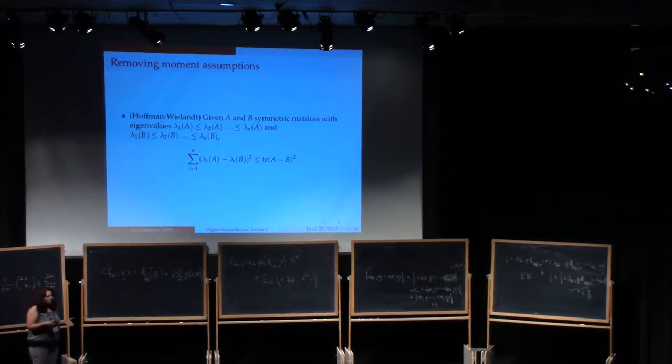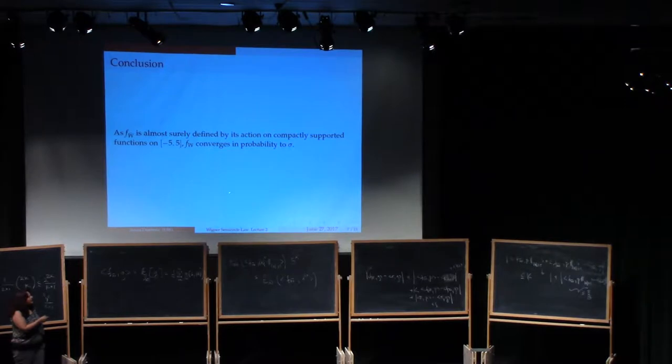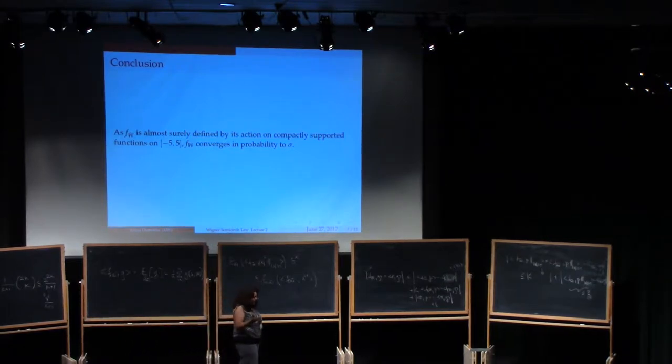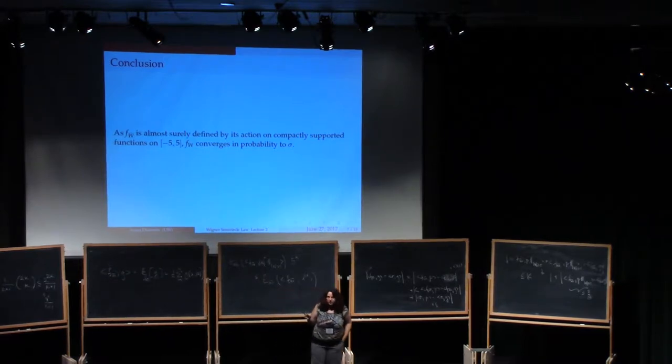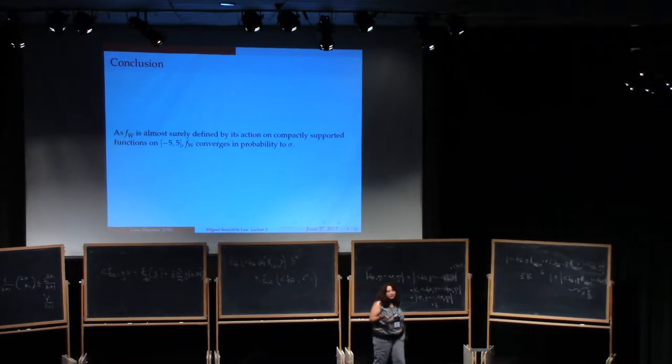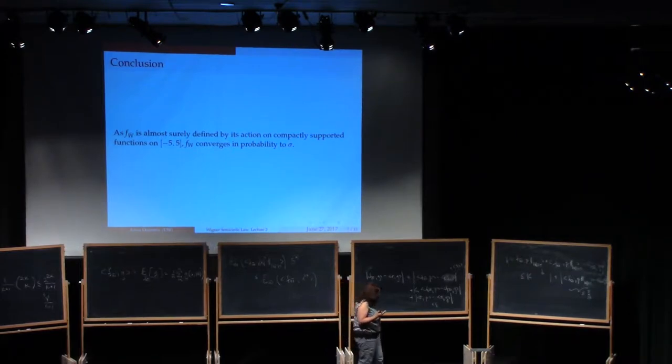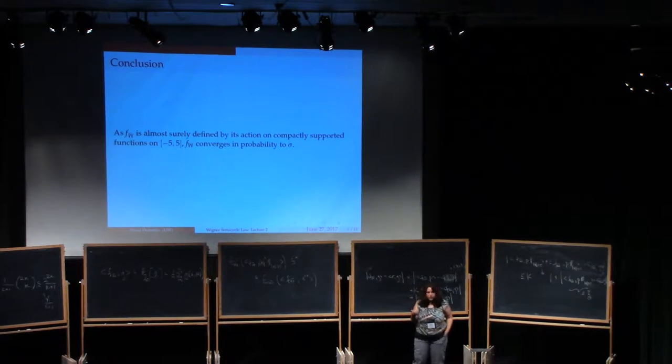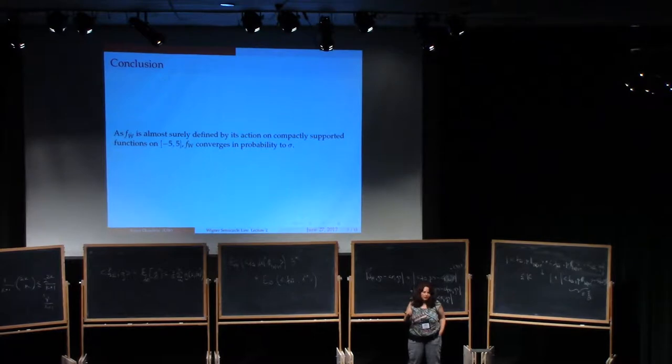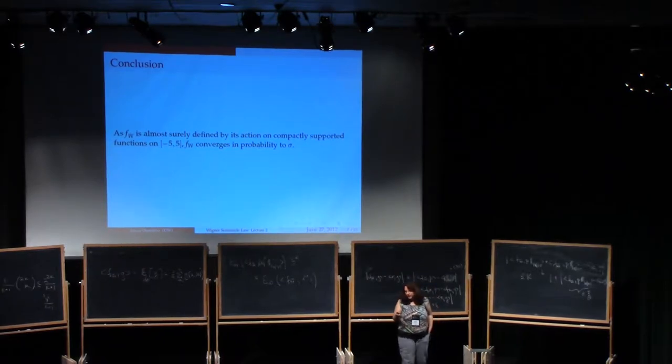But mind you, let me stay here for another second. We only showed this by doing path counting and a bunch of other stuff, and for that you have to assume the existence of moments of every kind. So all the moments are bounded. However, in practice, that's not the requirement for the ESD to converge to the semicircle distribution. So what I'm going to do now is I'm going to remove that. I'm going to only keep as requirements the centering of the variables, the fact that the off-diagonal variables have variance one, and the fact that the diagonal variables have bounded variance.